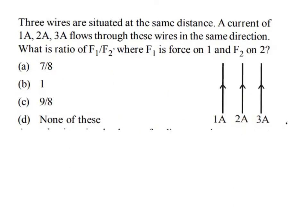Next problem: three wires situated at the same distance d carry currents in the same direction. We need to find the ratio F1 to F2, where F1 is the force on wire A and F2 is the force on wire B. Since all currents are in the same direction, all conductors attract each other.